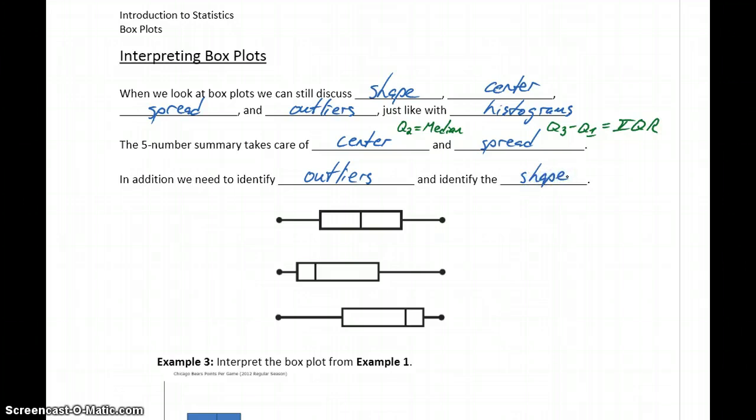Just like histograms, we can still have symmetric, right-skewed, and left-skewed distributions. We can still recognize when those different distributions are occurring. For instance, in our first graph, we have something that's relatively symmetric.